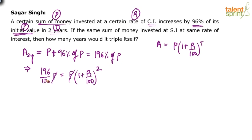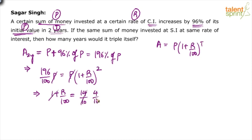Applying square root on both sides: 196 is 14 squared and 100 is 10 squared, so (1 + R/100) = 14/10. Taking minus 1 on both sides gives R/100 = 4/10. So R = 40%. The rate of interest is 40%.